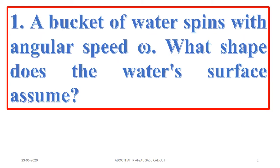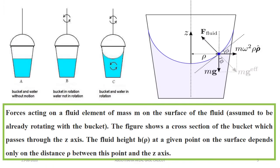The first problem we are going to discuss is: a bucket of water spins with angular speed omega. What shape does the water surface assume? When the bucket with water spins, you will get a paraboloid shape on the surface of the water. In the figure on the right you can see the forces acting on the water element on the surface.